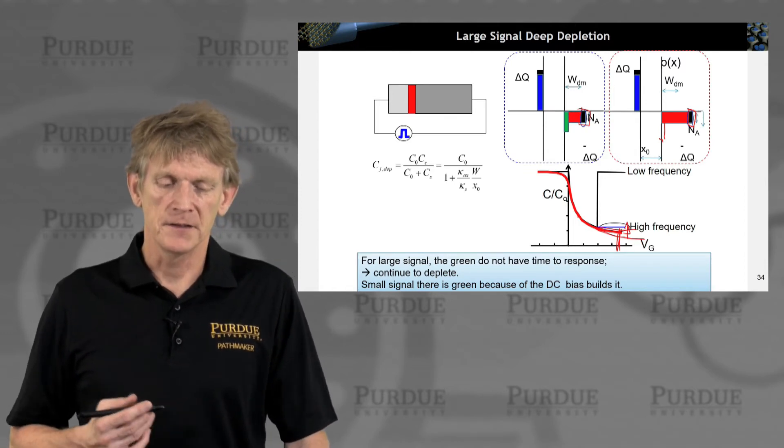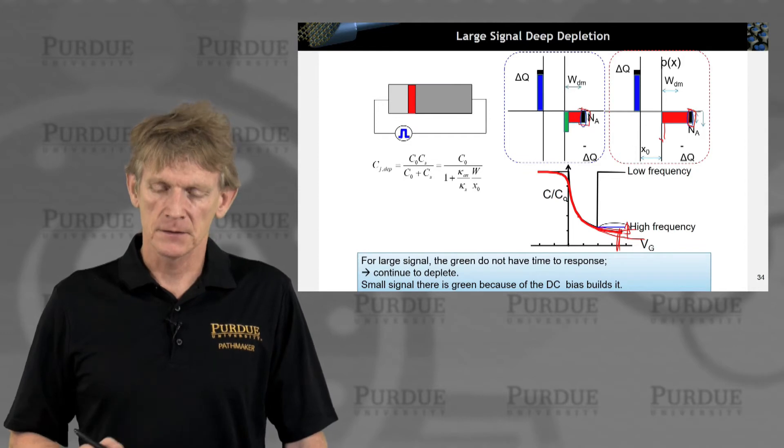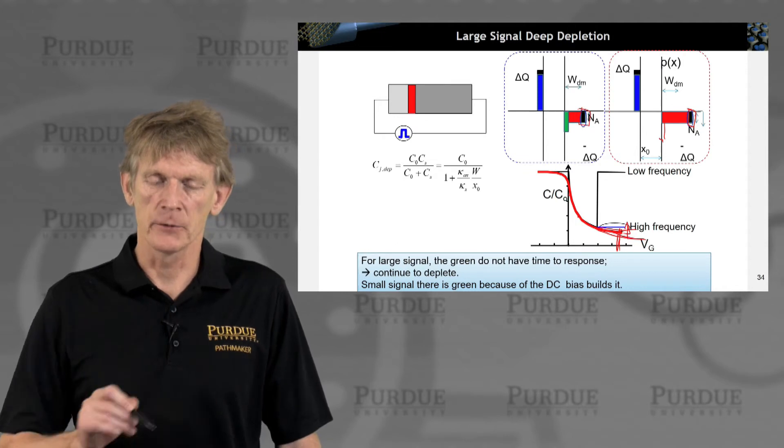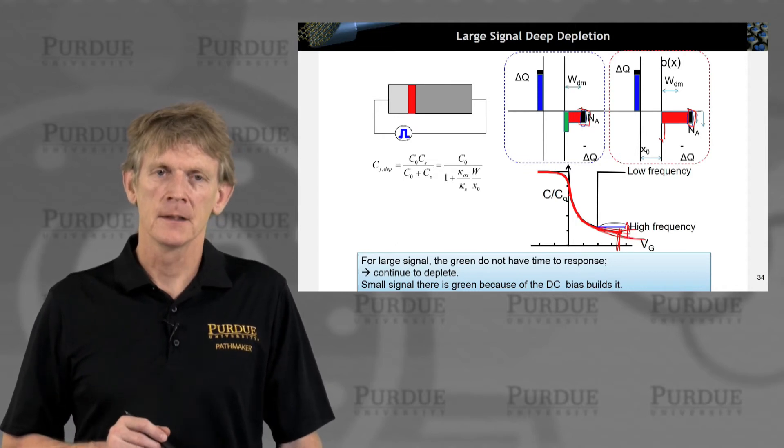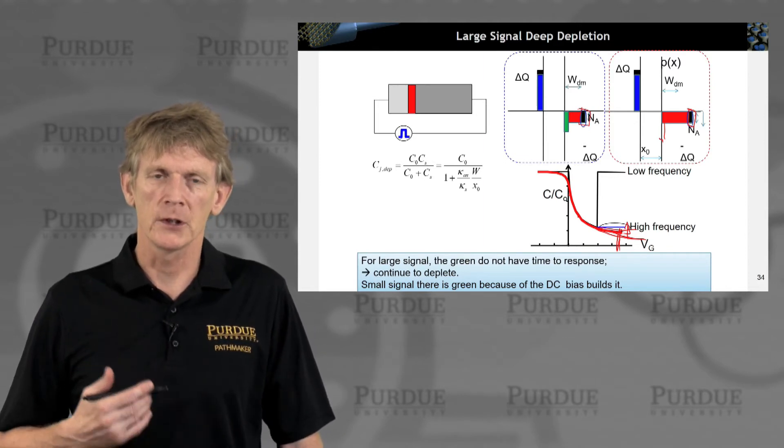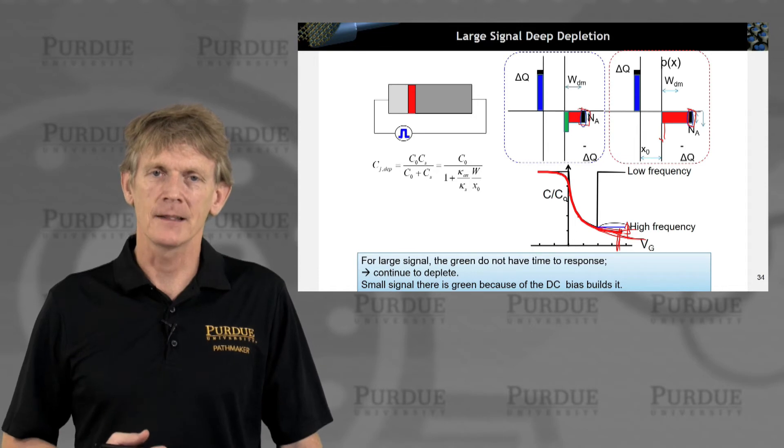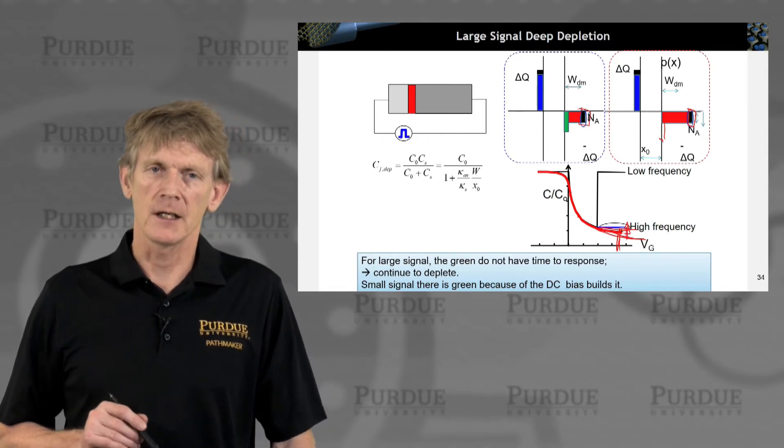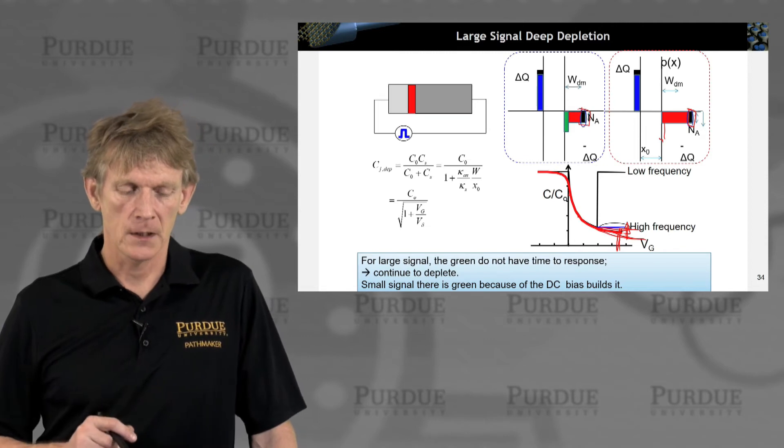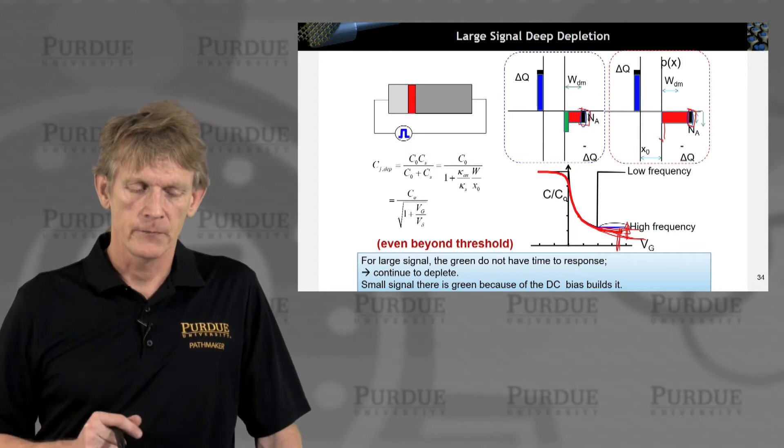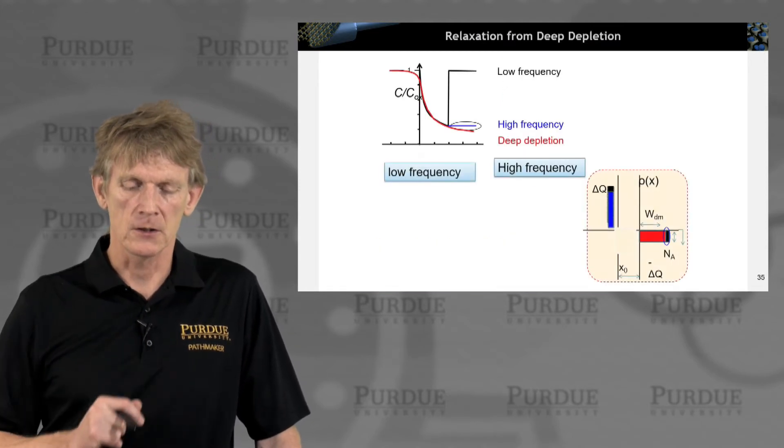So we can calculate a deep depletion region capacitance. It just follows the same square root as a function of voltage behavior we have calculated before. But once you end this large signal response and put it into steady state, again, not applying another system, eventually this capacitance will creep up to its high frequency value by electrons getting generated. So here is, again, the square root dependence as a function of voltage. This would be beyond, even beyond the threshold.